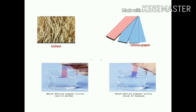When this red color litmus paper is dipped in base, it converts or turns blue color. But if this red color litmus paper is dipped in acid, it does not change its color. Then when this blue color litmus paper is dipped in acid, it turns red color. But when this blue color litmus paper is dipped in the basic solution, it does not change its color.